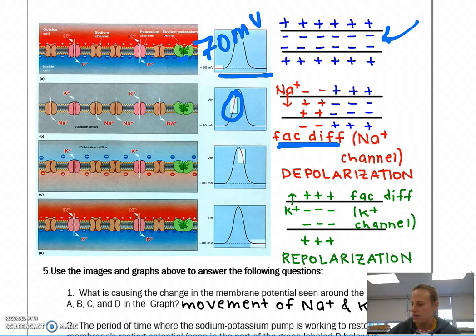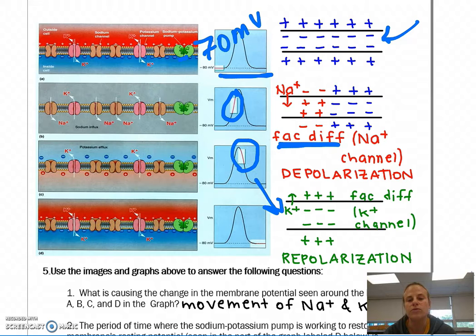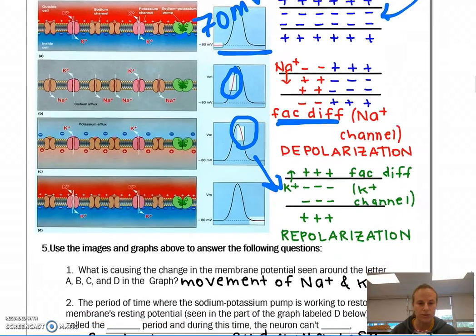But wait a second. I need to repolarize my neuron. I need to get back to that resting potential. So what happens is called repolarization, where potassium ion channels open. And now potassium moves out of the cell, returning the inside of the cell to that negative charge that it wants to have in its resting membrane potential. So that's called repolarization.